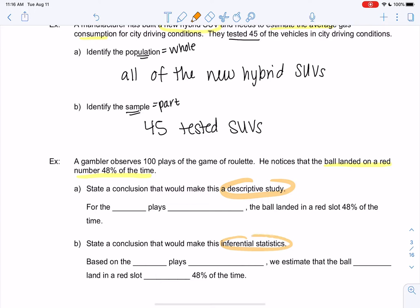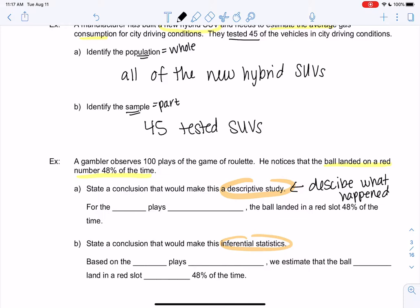So the gambler noticed that the ball lands on red 48% of the time. So we can make this descriptive or we can make this inferential. So descriptive is essentially only describing what happened. So I think writing conclusions helps us see the difference.